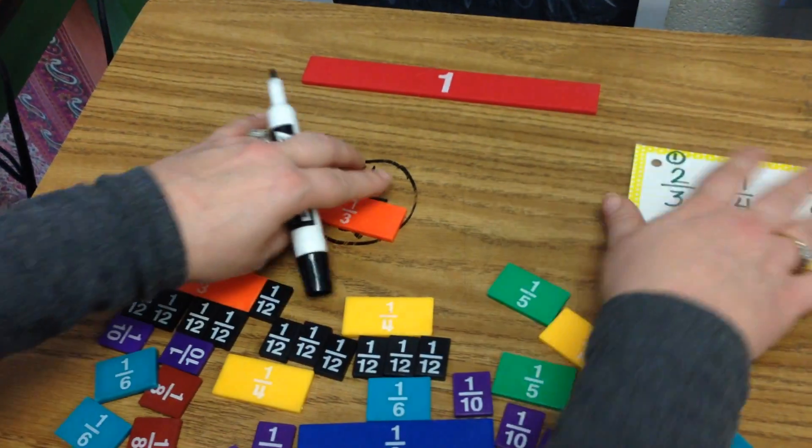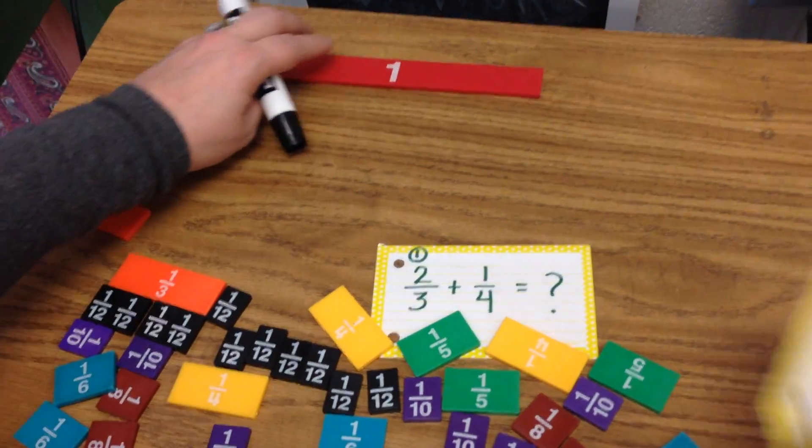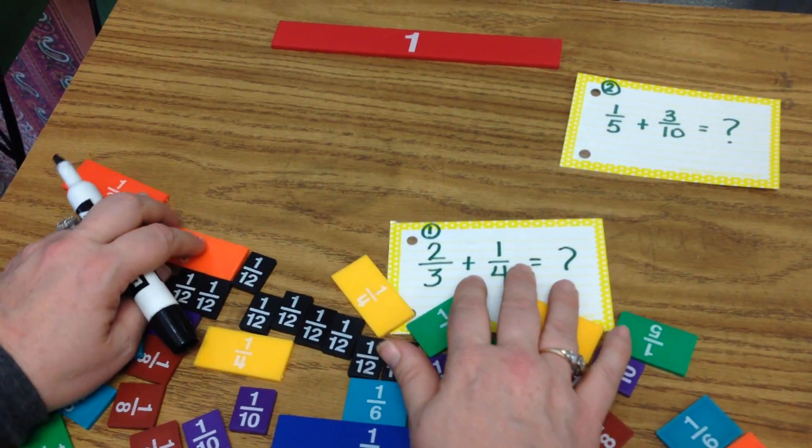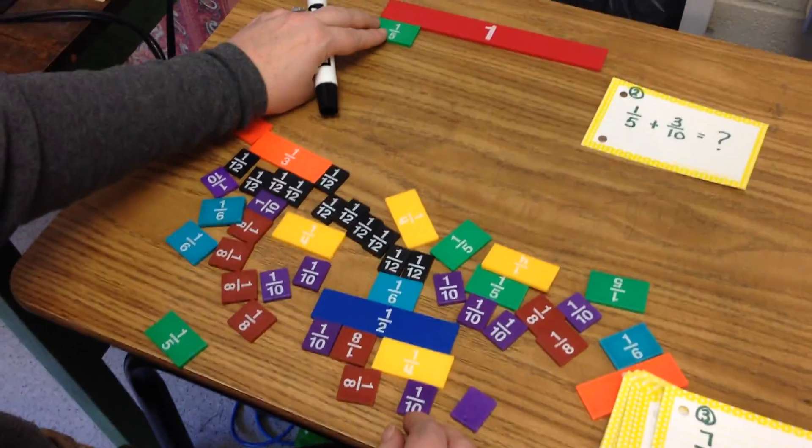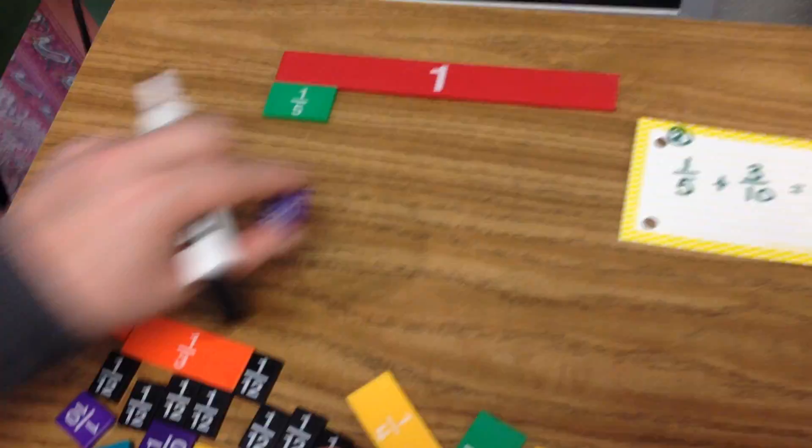For the next card, we're going to try one-fifth plus three-tenths. So you want to model one-fifth and then three-tenths.